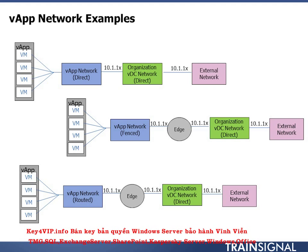The next design is a routed vApp network. It's similar in look to the fenced network, but doing different things. The virtual router — the edge device — sits between the vApp network and the org VDC network. Its purpose is to provide services: a new subnet, routing, NAT, firewall, and similar capabilities, so that the vApp is in its own different world behind the edge device. Past that point, the org network could be direct to the external, isolated, or routed. We're just focused on the relationship between the vApp network and the org network — in this case, a routed network with an edge router in the middle.